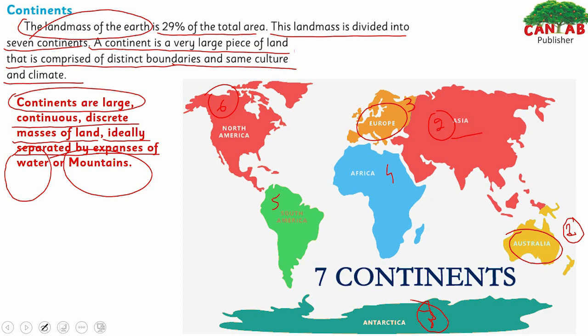Between Asia and Australia there is an ocean. Between Europe and Africa there is the Mediterranean Sea, and there is a portion where Asia and Europe are connected, but there are also mountain ranges there. Between Africa and Asia there is also a portion of water. So continents are divided either by huge masses of water or huge masses of mountains.